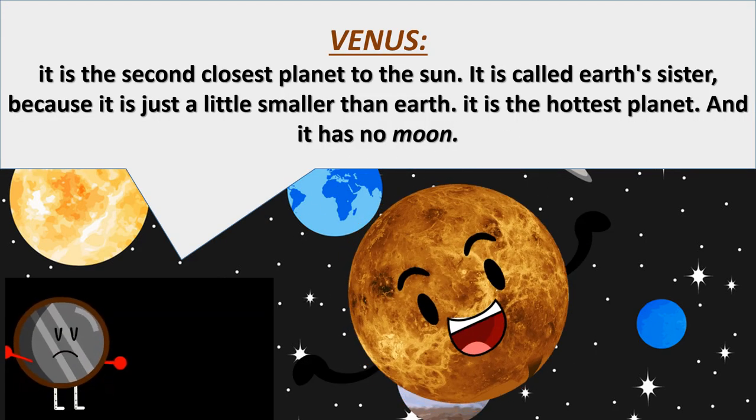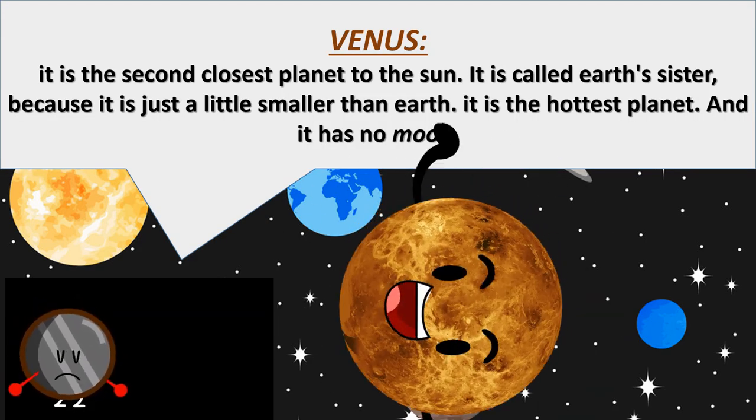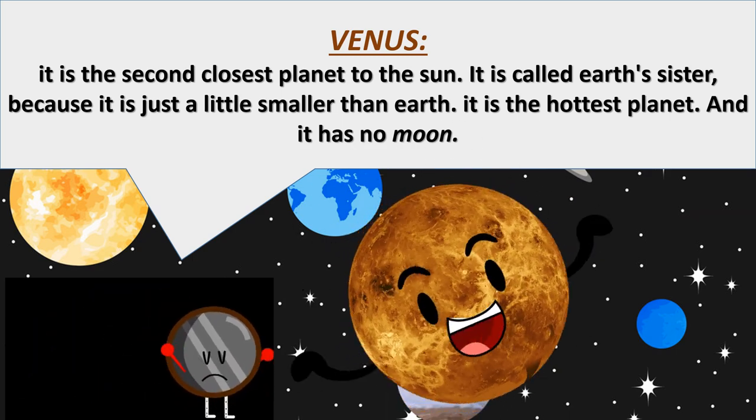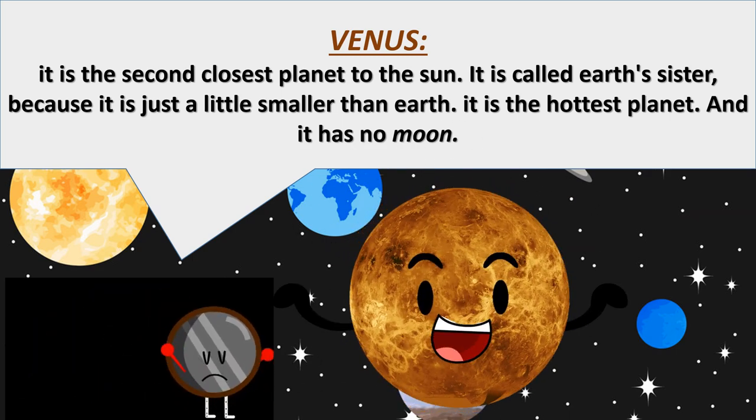Venus. It is the second closest planet to the sun. It is called Earth's sister because it is just a little smaller than Earth. It is the hottest planet and it has no moon.